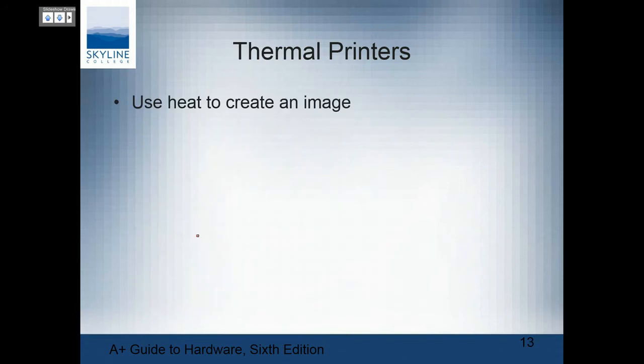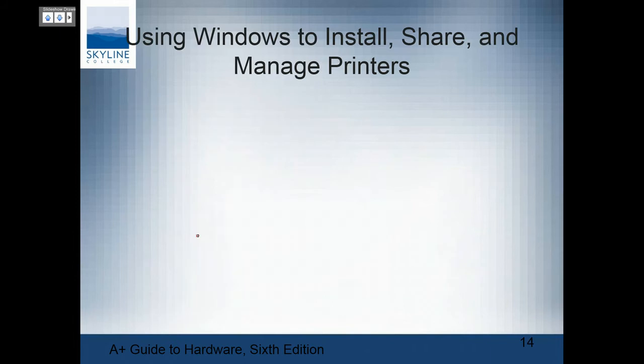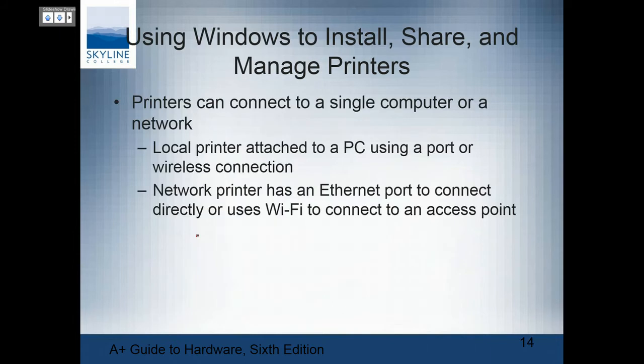Thermal printers use heat to create the image, and you have to have special thermal paper — it burns the dots onto it. Used for receipts, cash registers, gas station pumps. It contains a wax-based ink; the heating element melts the ribbon onto the thermal paper. Used to print barcodes, receipts, and clothing labels. They are reliable and easy to maintain, but they do degrade over time when exposed to light. If you need receipts, keep them — you may want to make a copy.